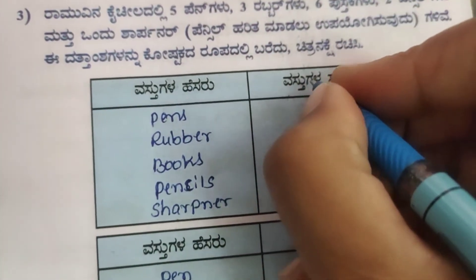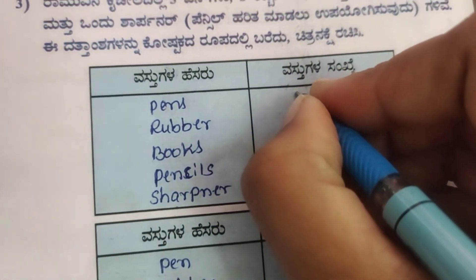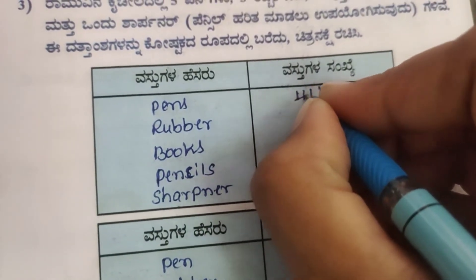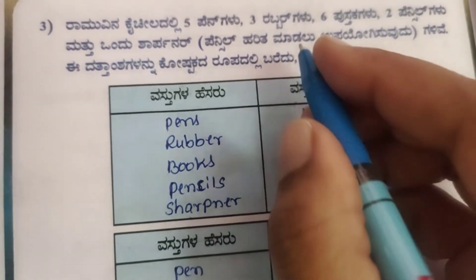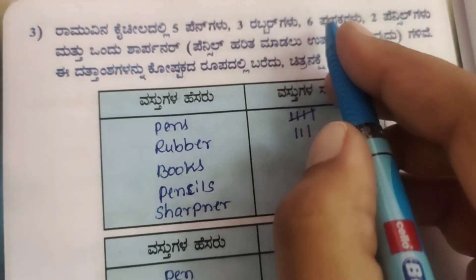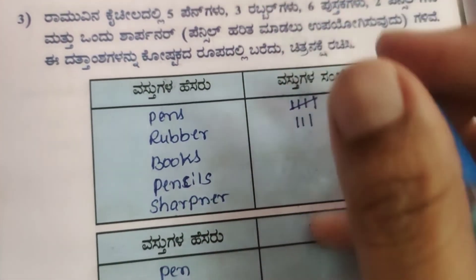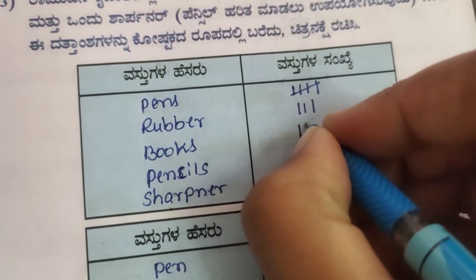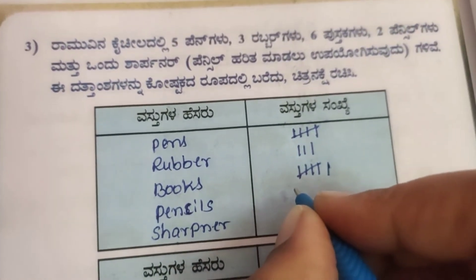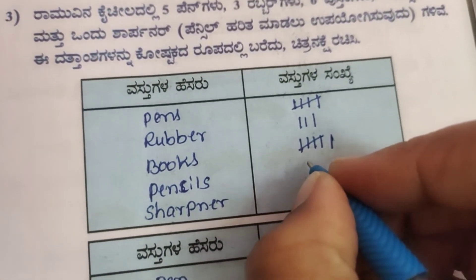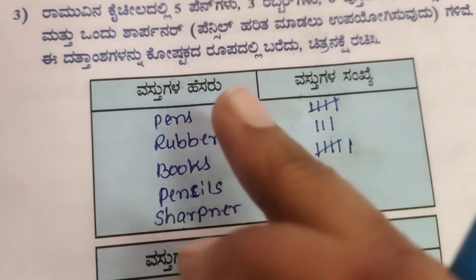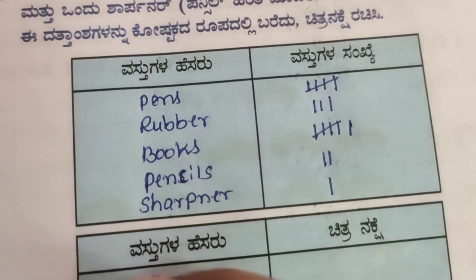Now let's write the tally tabular column. Name of the things and number of things: Pens - 5 tally marks. Rubber - 3 tally marks. Books - 6 tally marks. Pencils - 2. Sharpener - 1. This is the tally tabular column work.